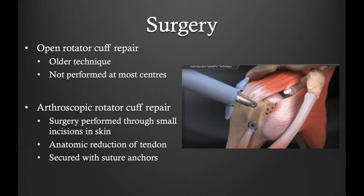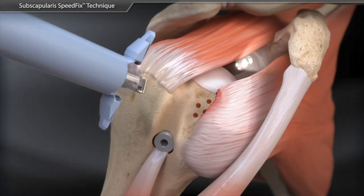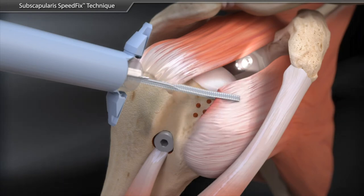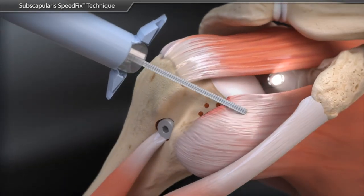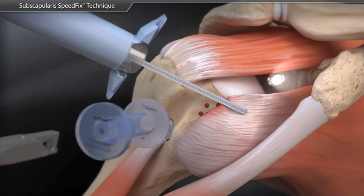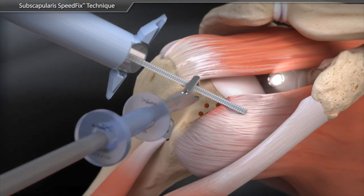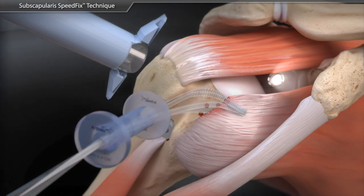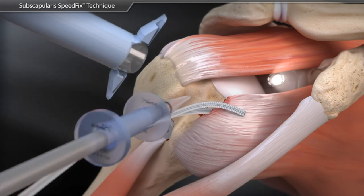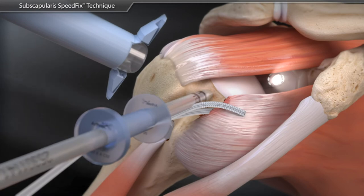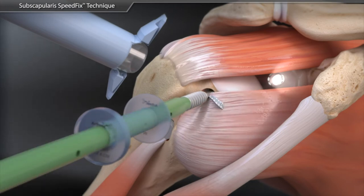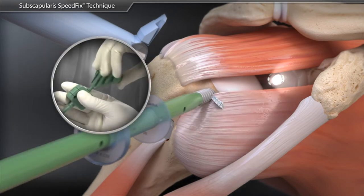Surgery is typically done arthroscopically. As this animation shows, small incisions in the skin are used to pass arthroscopic instruments. These instruments then pass sutures through the torn subscapularis tendon. These sutures are then loaded through a suture anchor outside the skin. A hole is then made in the bone and the suture anchor is then placed into the bone, therefore securing the subscapularis tear. This can be done on an outpatient and minimally invasive format in order to ensure the optimal recovery for the patient. As you can see, the tendon is then firmly adhered back to the bone.